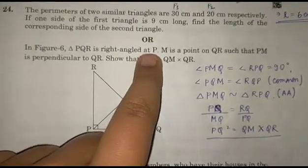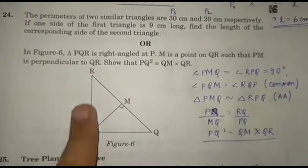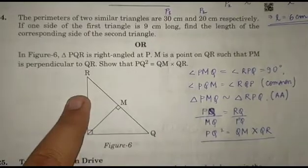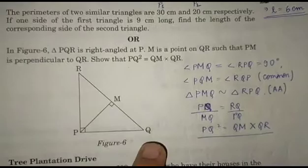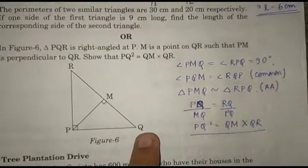The OR part: In figure 6, we can see triangle PQR is a right angle at P, and M is a point on QR such that PM is perpendicular to QR. We have to show PQ² = QM × QR.